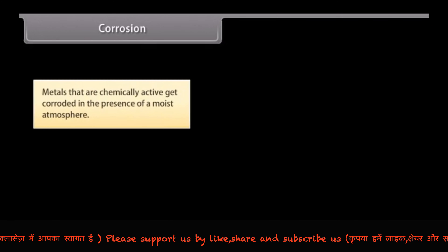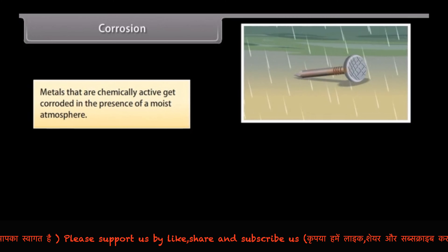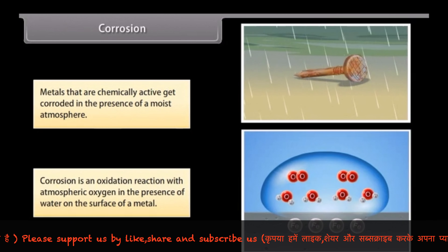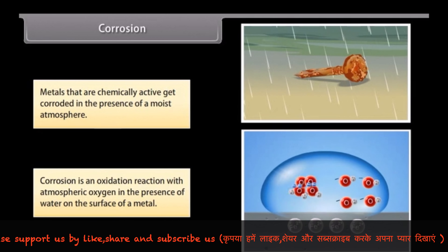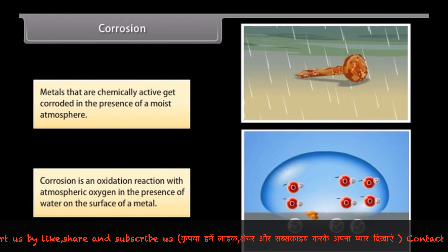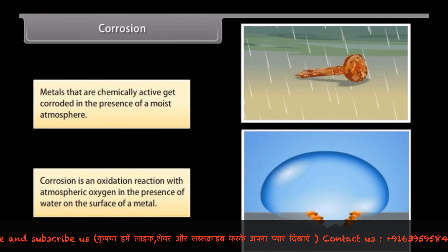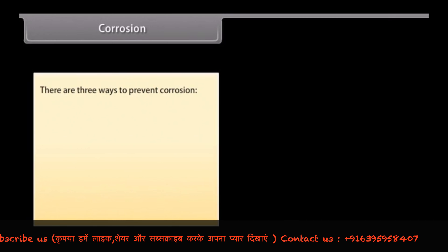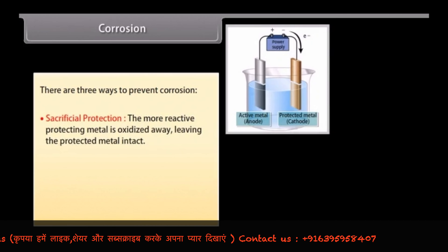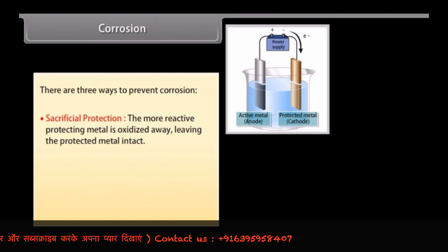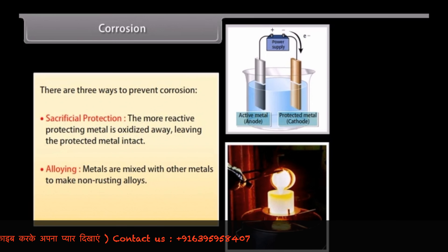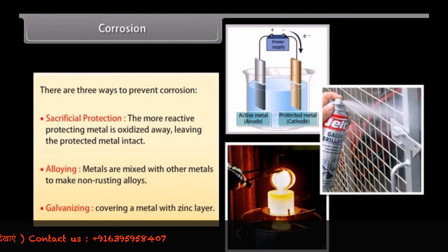Corrosion: metals that are chemically active get corroded in the presence of a moist atmosphere. Corrosion is an oxidation reaction with atmospheric oxygen in the presence of water on the surface of a metal. For example, iron and aluminium corrode. However, non-reactive metals like gold, platinum, and mercury do not corrode. There are three ways to prevent corrosion: sacrificial protection, where the more reactive protecting metal is oxidized away leaving the protected metal intact; alloying, where metals are mixed with other metals to make non-rusting alloys; and galvanizing, where a metal is covered in a thin zinc layer produced by electrolytic deposition.